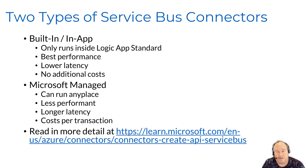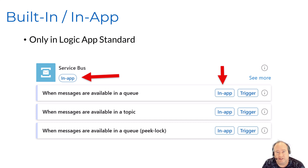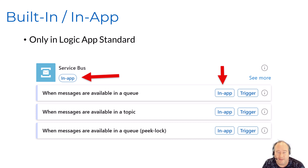If you're looking for more detailed information about these two types of connectors, you can follow this link below. Let's dive into a little bit more detail about these connectors. The built-in in-app connector is only available in Logic App Standard. When you search for this connector inside your Logic App, you could see both types of connectors depending on your search logic. You want to select the one that is tagged in-app in order to select your in-app connector.